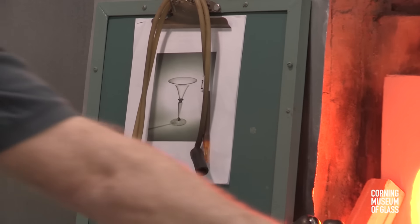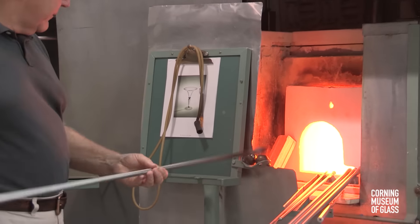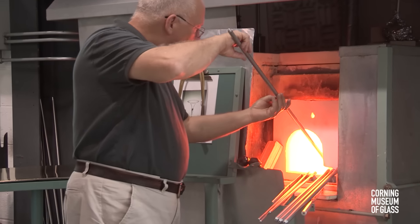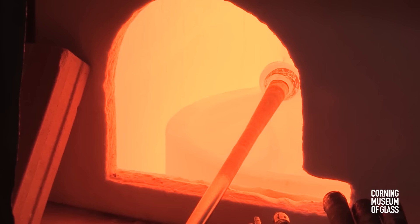This exceptionally elegant glass is a perfect example of an object built on the blowpipe. So the first gather will become the cup of the vessel.